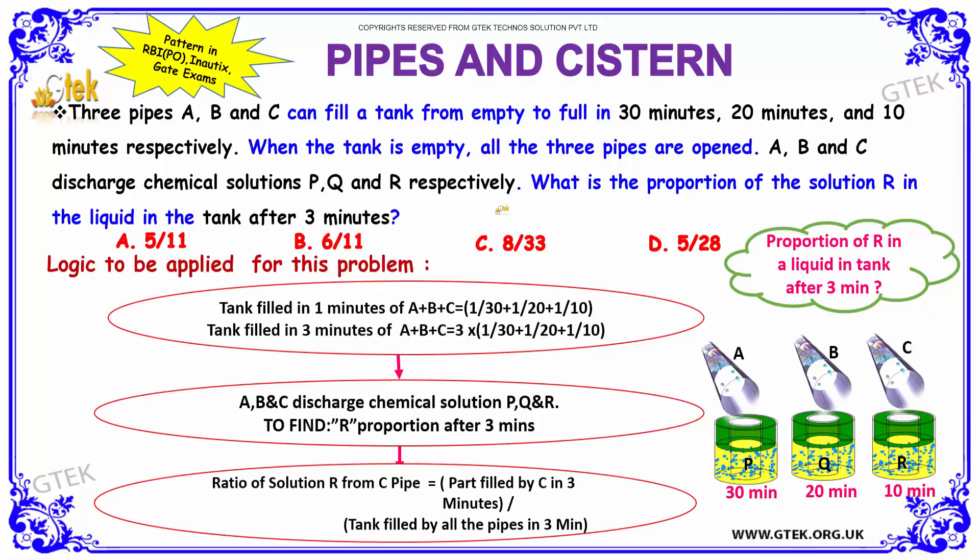Let us see how to solve this. Tank filled in 1 minute by A, B, C should be found, followed by tank filled in 3 minutes by A, B, C. That is 3 times the tank taken to fill in 1 minute. A, B, and C discharge chemical solutions P, Q, and R. You have to find R's proportion after 3 minutes. The ratio of solution R from C pipe is the part filled by C in 3 minutes divided by the tank filled by all three pipes in 3 minutes. Let us see how to apply this logic.